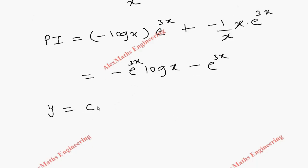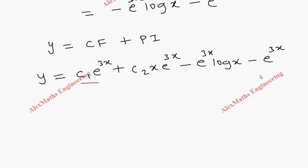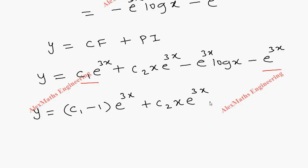The complete solution is y = CF + PI: y = c₁e^(3x) + c₂x·e^(3x) - e^(3x)·log x - e^(3x). Since we have two like terms with e^(3x), we can combine: y = (c₁ - 1)e^(3x) + c₂x·e^(3x) - e^(3x)·log x.